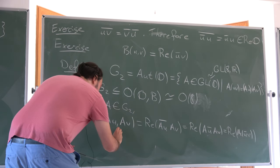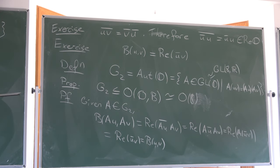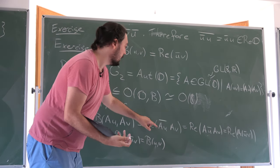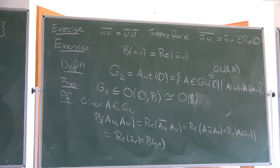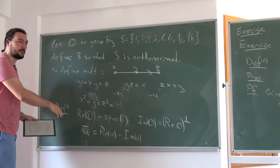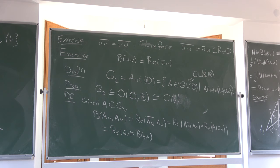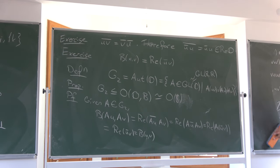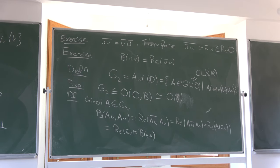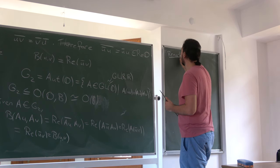If you have a multilinear map L from an inner product space V (r copies) to V itself, we call L an r-fold cross product operation if two conditions hold: first, the inner product of each input V_i with L(V_1,...,V_r) is zero for all i; and second, the norm of L(V_1,...,V_r) equals the norm of V_1 ∧ V_2 ∧ ... ∧ V_r, using the induced norm on the exterior algebra.